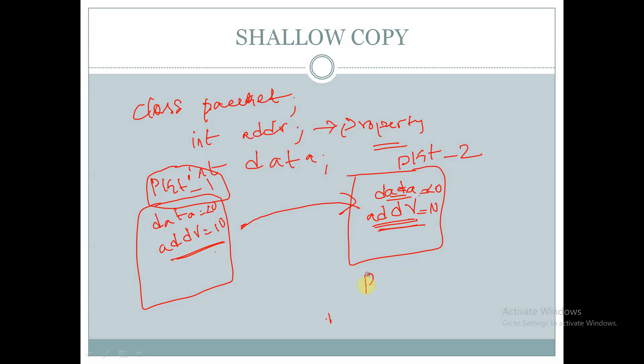So if we want to make any changes to the data and addr using the pkt2 handle, pkt2.addr equal to 30 and pkt2.data equal to 40, then this data will be equal to 40 and this addr will be equal to 30.